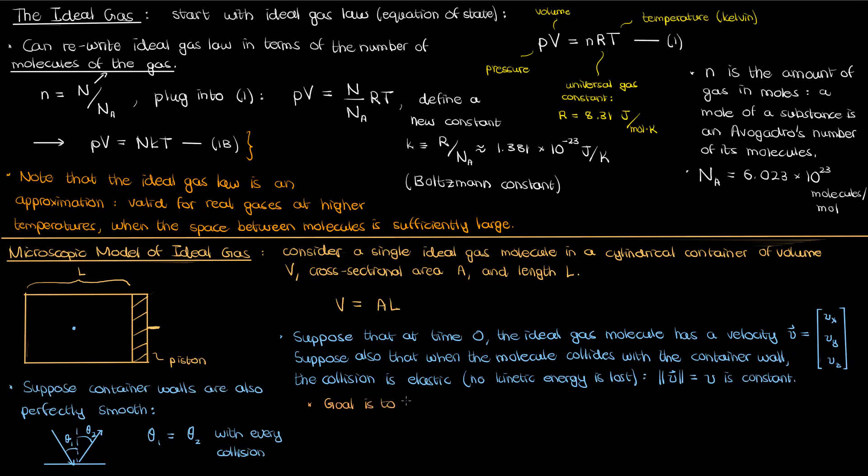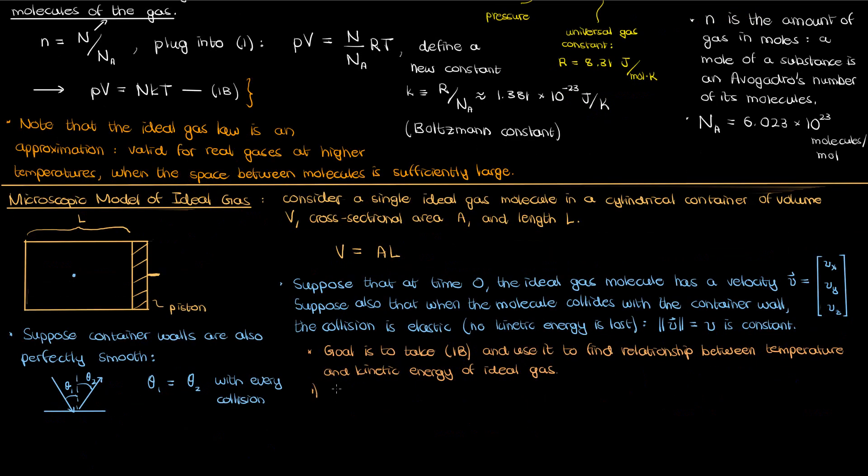Now our goal is to take equation 1b, our lightly modified ideal gas law, and use that to determine the relationship between the temperature for ideal gas molecule and its kinetic energy. This will be a two-step process. We'll first find the relationship between pressure and kinetic energy, and then we'll use equation 1b to relate that kinetic energy to temperature.